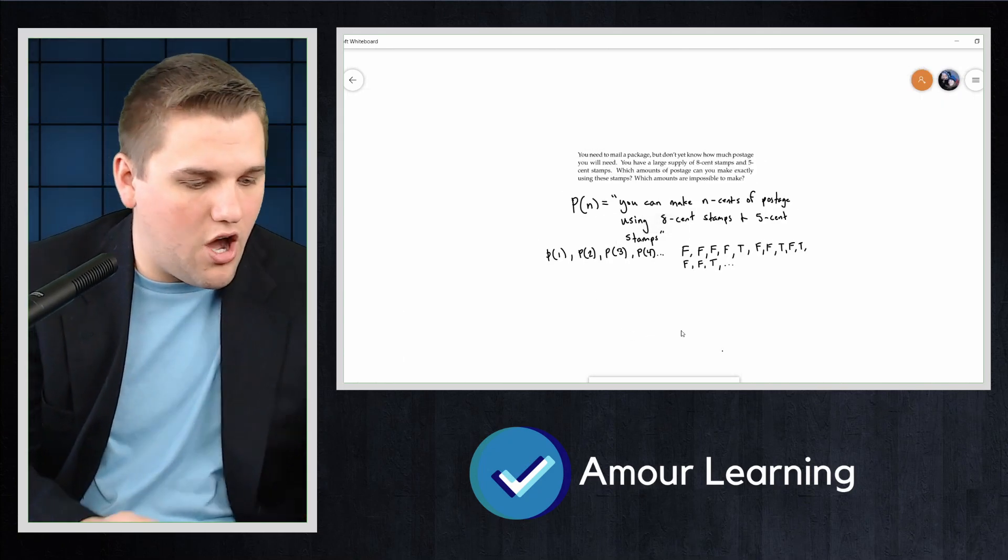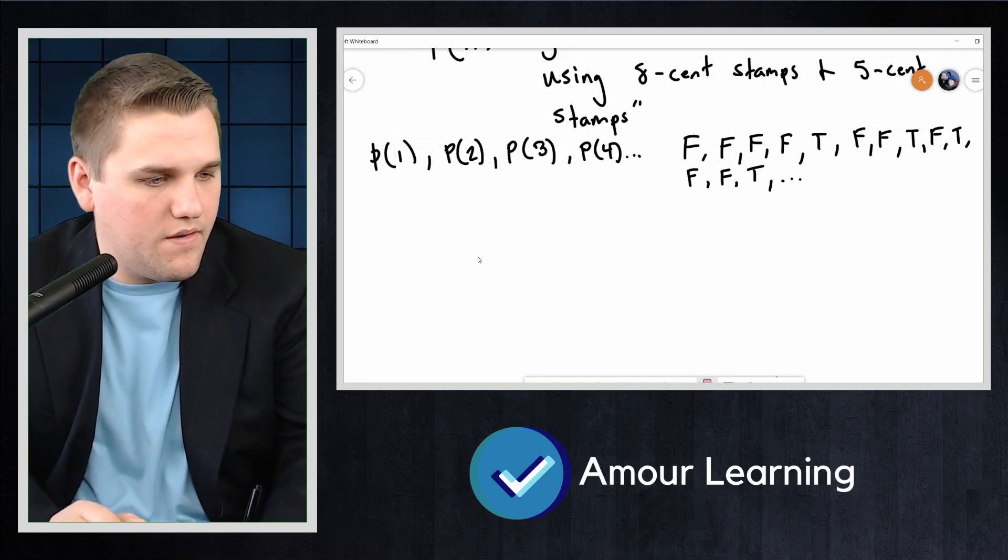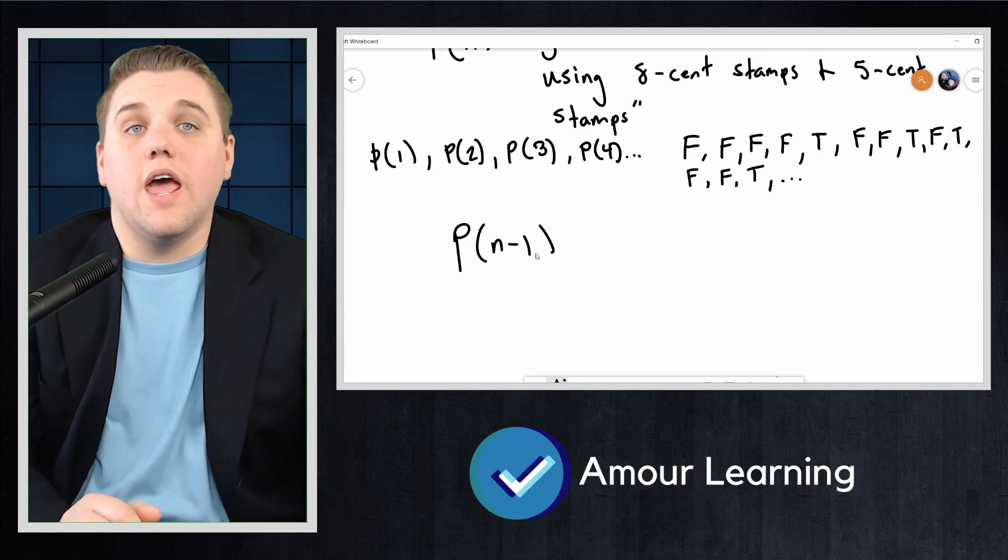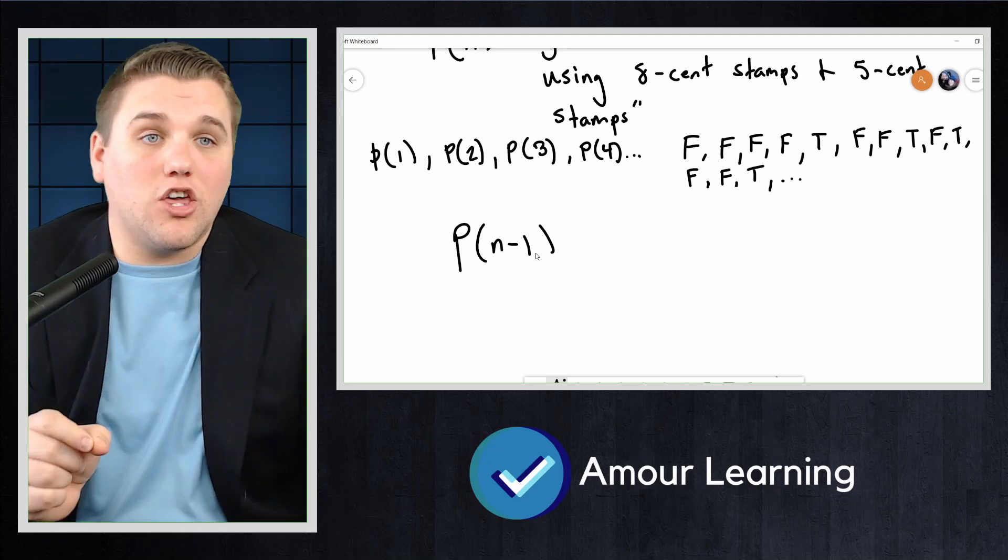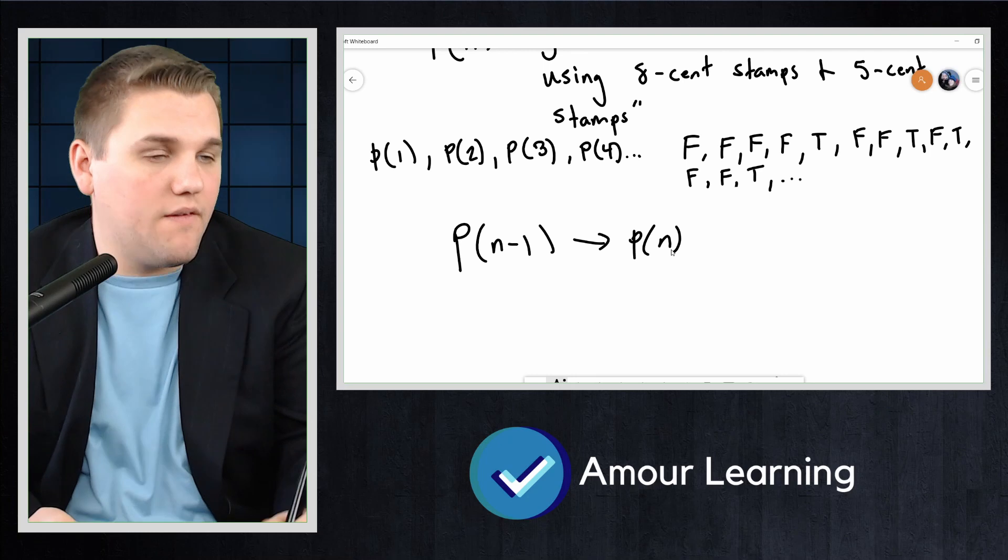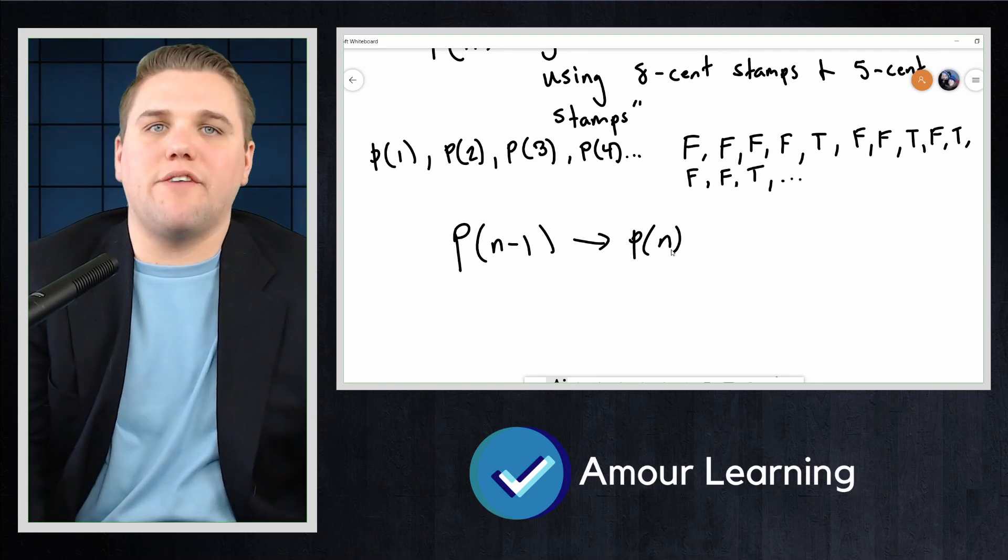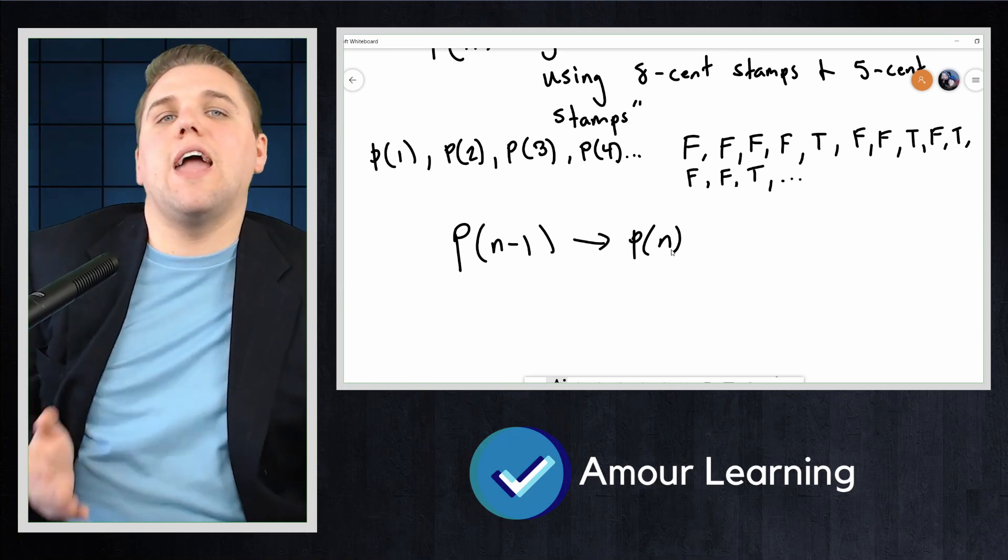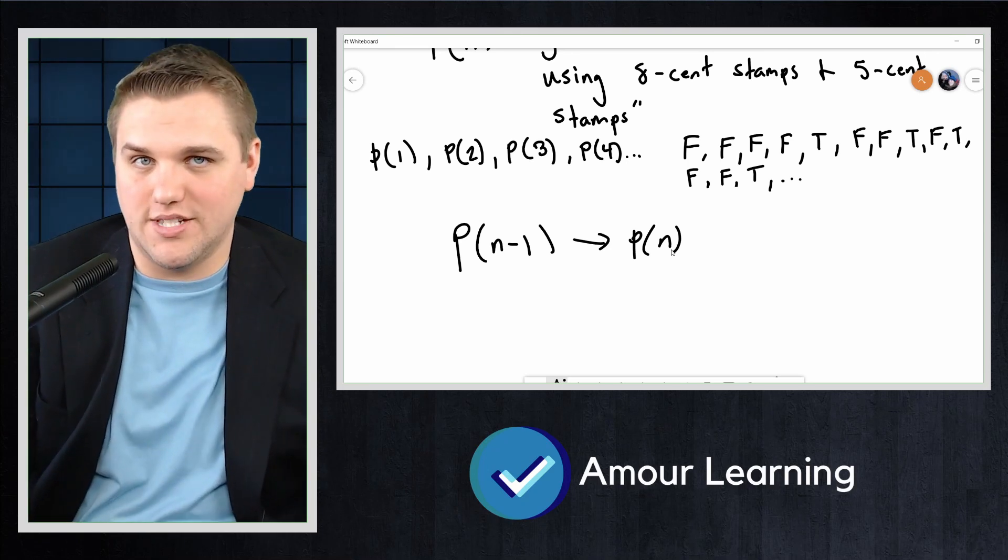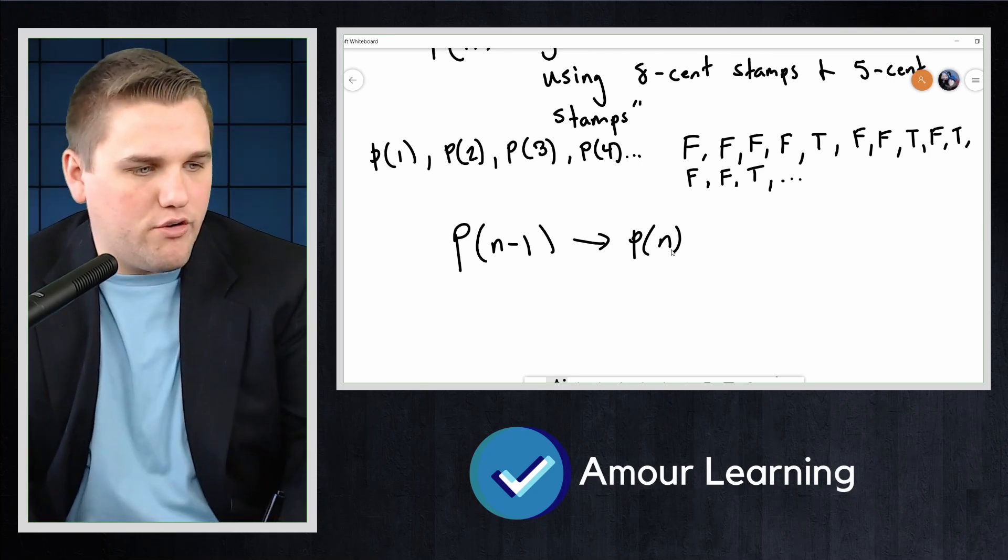Let's say if we know the value of P(n-1), can we get from that to the value of P(n) somehow? That would be something like a recursive definition for the sequence. Remember, finding recursive definitions for sequences was often easier than finding closed formulas.